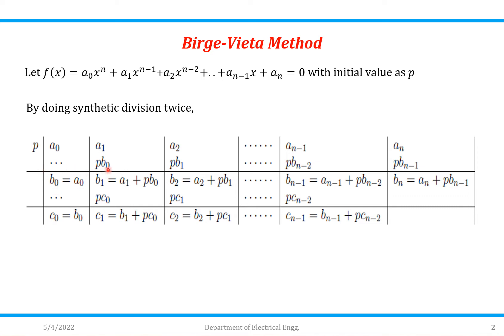So that's why it is b₀ into p. We have to add this which will be equal to b₁, that is equal to a₁ + p × b₀. So likewise we have to perform synthetic division twice.